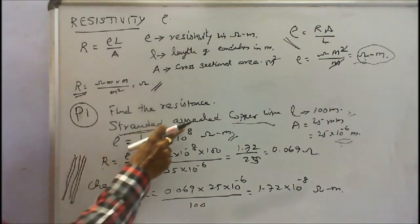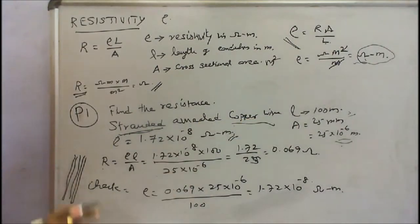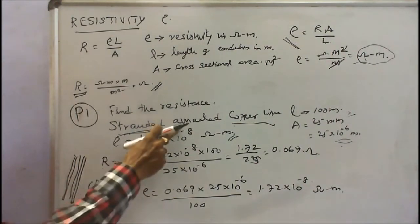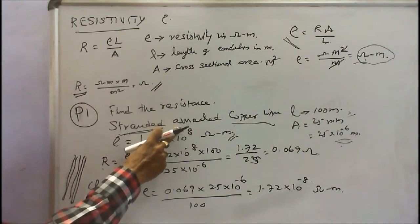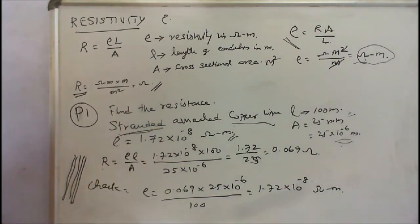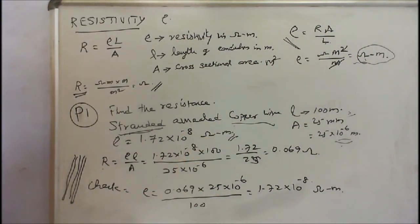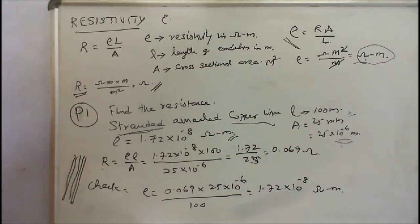What is meant by annealed copper wire? Annealing is a process of heating and cooling done by metallurgists to improve the ductility, malleability, and tensile strength of a material. There are two types of copper wire: hard drawn copper and soft drawn copper. Soft drawn copper is normally used as an earth wire because it is very malleable.